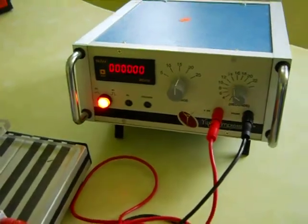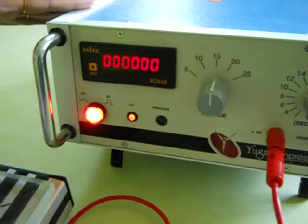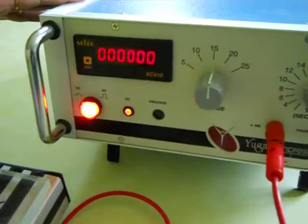By default, the machine is on AC mode, i.e. black etching. If you want to do white etching, put it on DC mode.